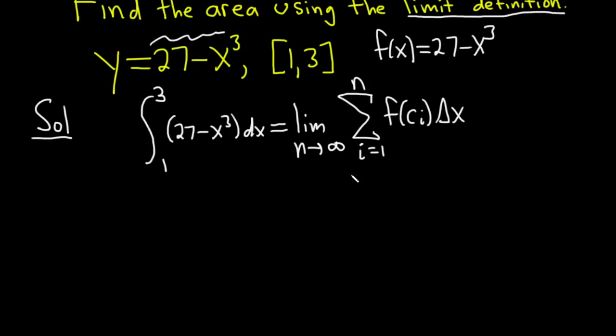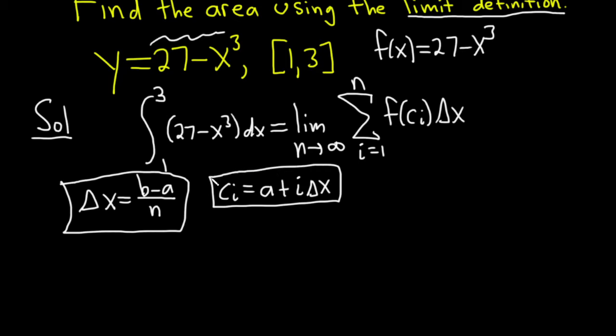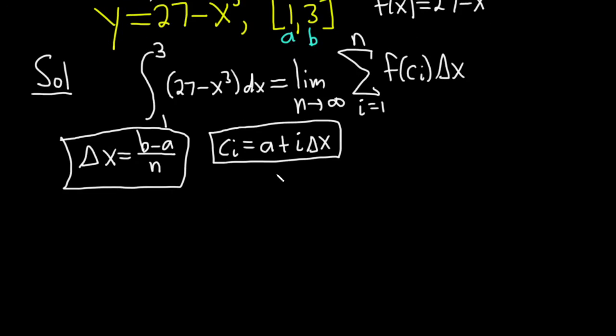So what is everything else? Delta x is going to be equal to b minus a over n. And c sub i we're going to use a plus i delta x. Equipped with these things we should be able to do this problem. In this particular problem a is 1 and b is 3. First we have to find delta x because it shows up in the c sub i so we can't find it without the delta x.